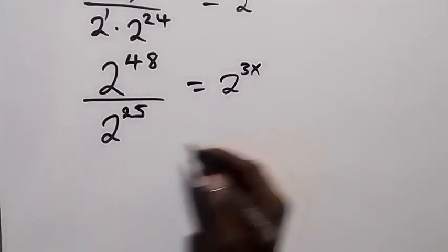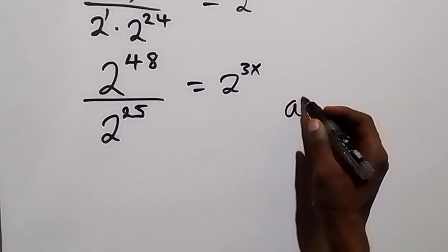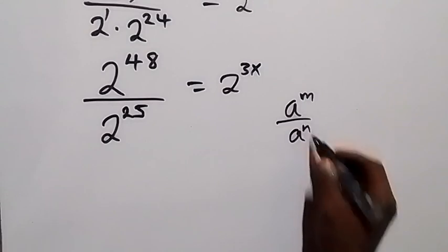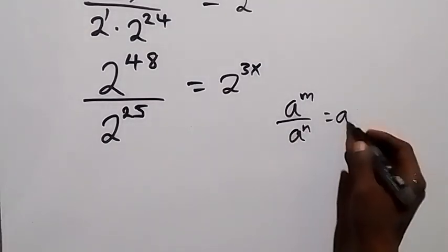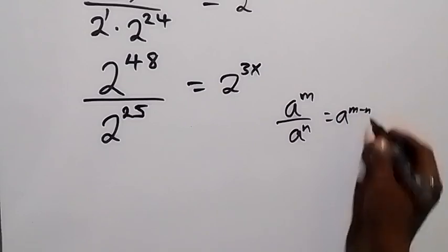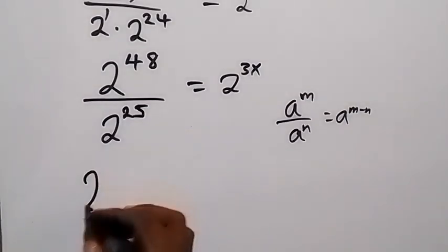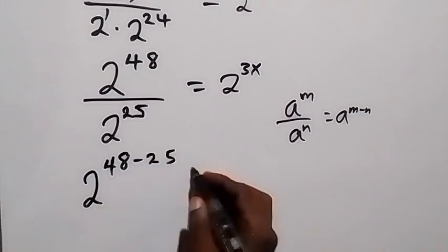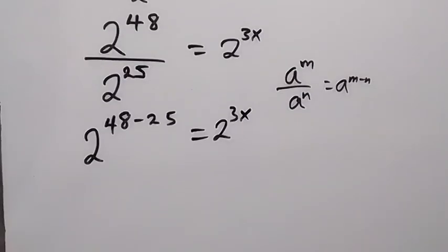Applying the law of indices: a raised to power m divided by a raised to power n equals a raised to power m minus n. Since we are dividing with the same base, we can subtract the powers. So this becomes 2 raised to power 48 minus 25, equals 2 raised to power 3x.